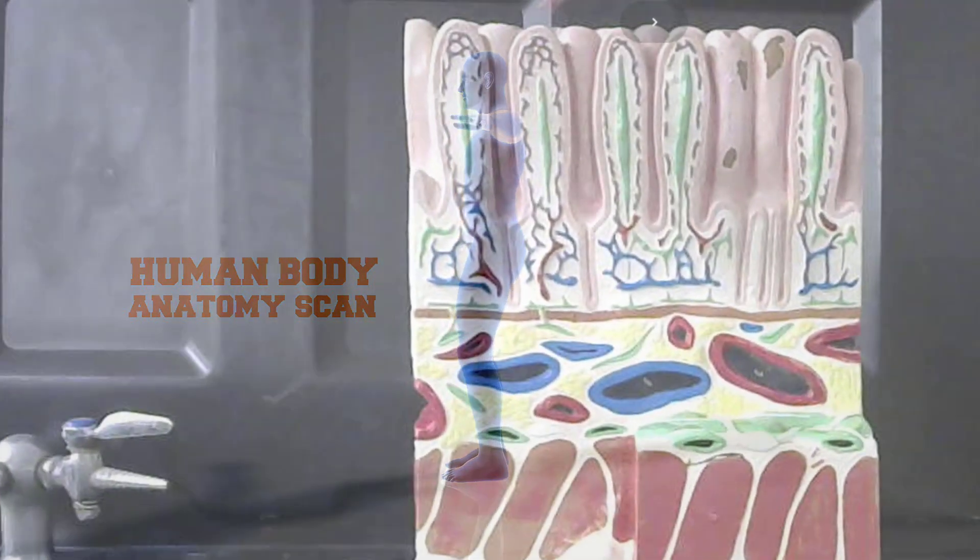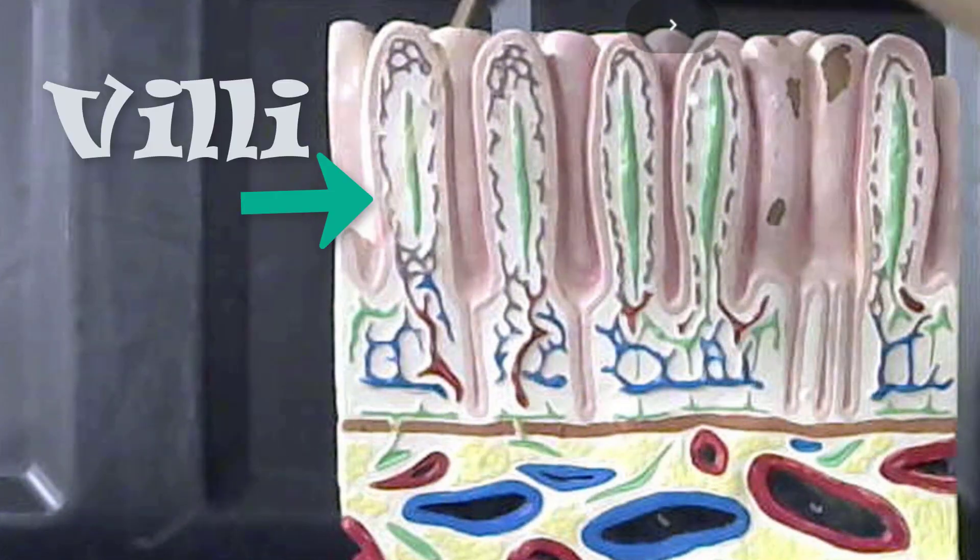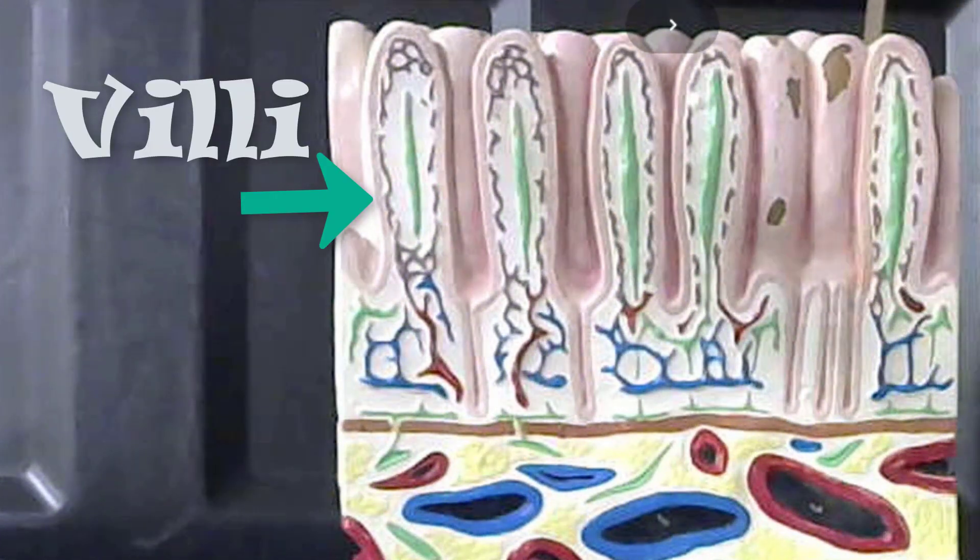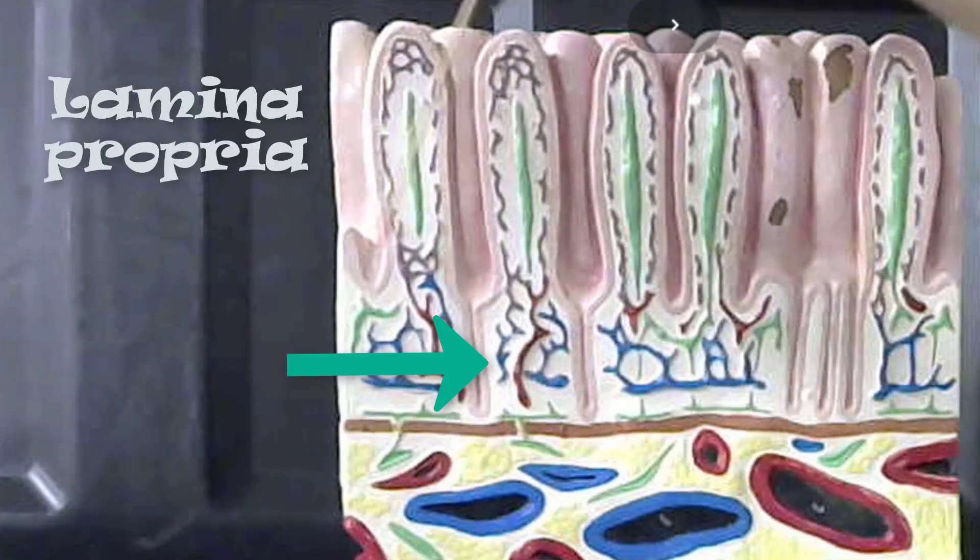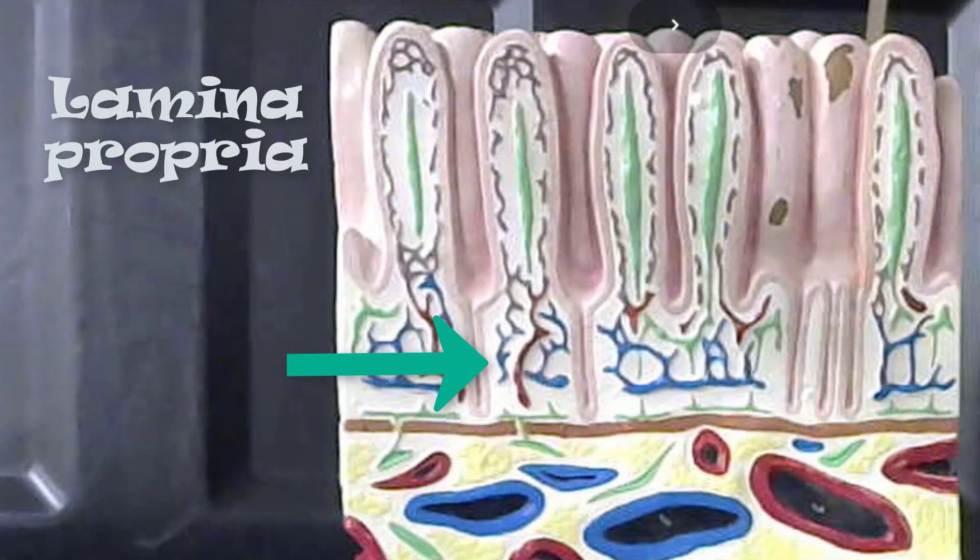The finger-like projections here are the villi. The villi are made up of simple columnar epithelium as well as the lamina propria that we see here in white.